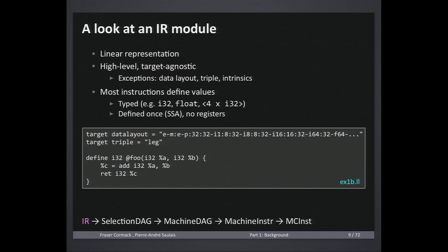The first and most high-level representation is IR, which most of you will be familiar with. It's linear — just a list of instructions — and almost completely target-agnostic. Most instructions define values which can be used as operands for other instructions. It has high-level types like i32, float, or vectors, and values are defined only once because it's in SSA form. At this point, there are no registers.